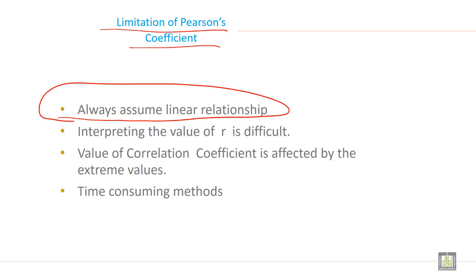The value of the correlation coefficient is affected by extreme values. This is one of the most important limitations of Pearson correlation. The value of R, the correlation coefficient, is affected by the extreme values.